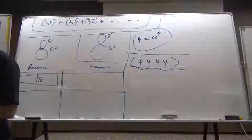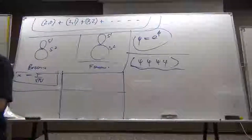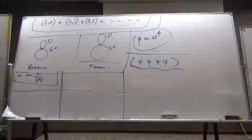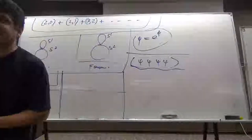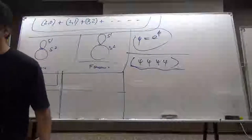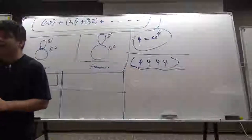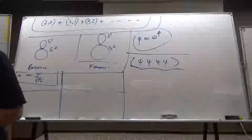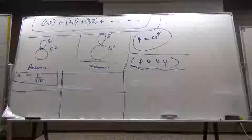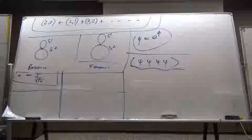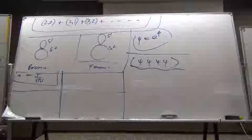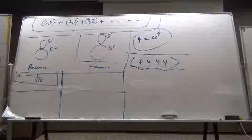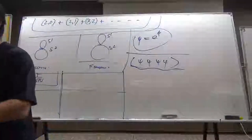Suppose you take N equals 4 Yang-Mills theory and put it on the three-sphere. N equals 4 Yang-Mills theory is a conformal theory, so on R3, the free energy scales like T to the 4 at all temperatures — there's no phase transition. However, on S3, there is a separate scale, so the free energy could be a non-trivial function of R times T. At low temperatures, the free energy turns out to be just given by a gas of traces, and because the spectrum of traces is independent of N, the free energy is independent of N.